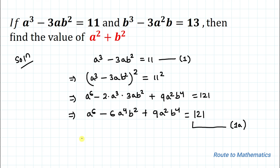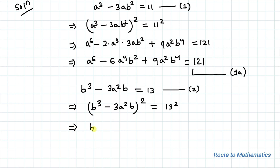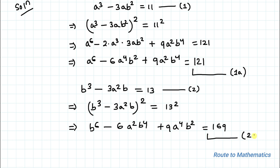Our second equation is b³ - 3a²b = 13. Similarly, squaring both sides, we have (b³ - 3a²b)² = 13² = 169. This gives b⁶ - 6a²b⁴ + 9a⁴b² = 169. Let's call this equation 2a.